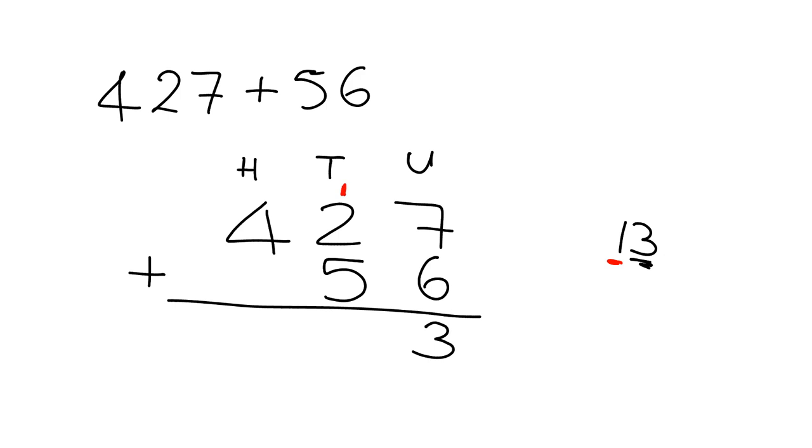Then we're going to add up everything in the tens column. So we've got 5 tens, 2 tens, and 1 ten. So it's 5 plus 2 is 7, plus 1 is 8. So we've got 8 tens. In other words, 80 there.